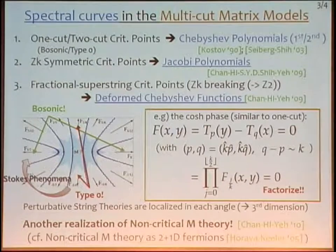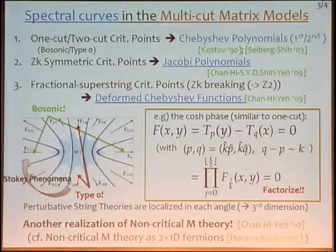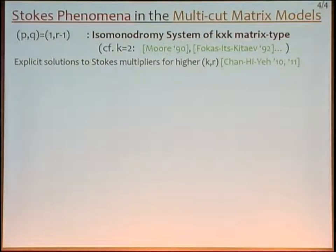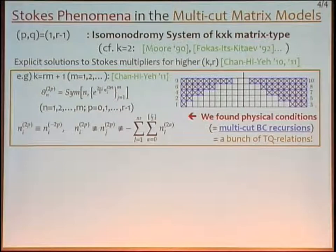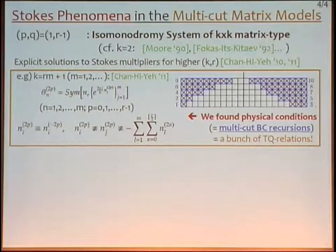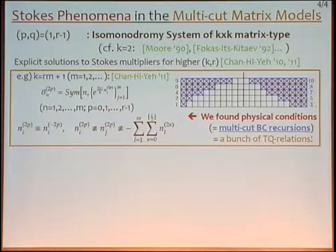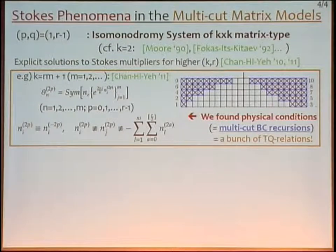Information beyond perturbation theory is encoded in the Stokes phenomena — how to connect the different string theories. We consider the Stokes phenomena at this critical point, and the solution is labeled by a Young diagram. Computing Stokes multipliers in the general case is mathematically very difficult, but we found a physical condition — the multi-cut boundary condition — that gives equations helping us obtain the Stokes multipliers. Interestingly, these equations are nothing but the TQ-relations of a quantum integrable system. This establishes a new relation between quantum integrable systems and non-critical string theory.